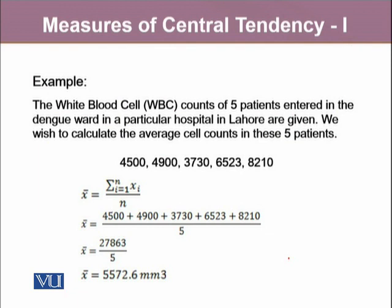Let's see an example. If we have the white blood cell counts of five patients entered in the dengue ward in a particular hospital in Lahore, we wish to calculate the average cell count in these five patients. The first patient, x₁, has the cell count of 4500. The second patient has x₂, which is 4900. Third patient, x₃, is 3730. And similarly, fourth patient and fifth patient will have certain cell counts. If you wish to calculate the mean for these five values, it is going to be x̄, which is sum i varies from 1 to n, xi divided by n, which is the sum of all observations: x₁ plus x₂ plus x₃, x₄, x₅ divided by 5.